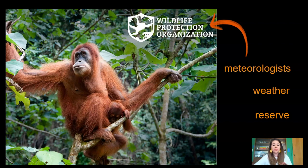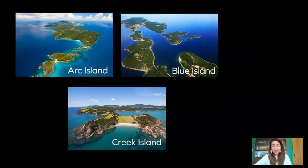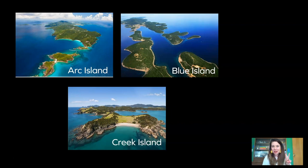Remember that a reserve is a protected area of land for animals to live. Here are the three islands we looked at last time: Arc Island, Blue Island, and Creek Island. We're looking for a place for the reserve that has a specific type of weather. Do you remember the two weather conditions from the last lesson that we're looking for? Say them now if you do.